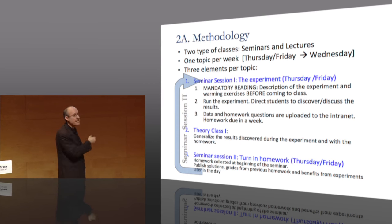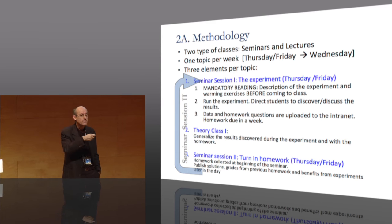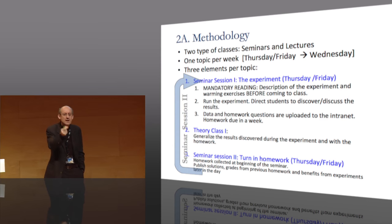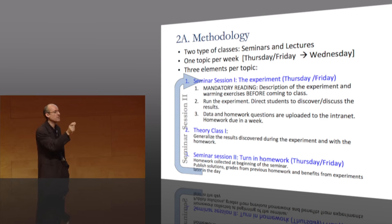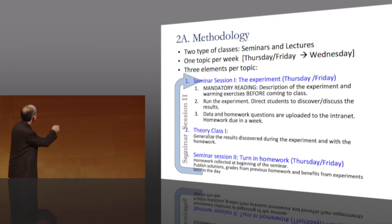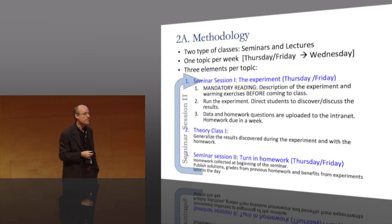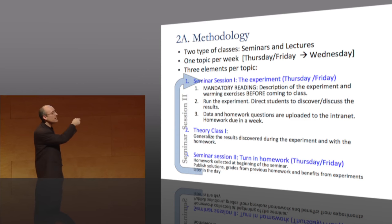The other important thing is that when students come to the theory class, they already know what they don't understand, because they have struggled. They have a clear idea of where they got stuck and couldn't finish their homework. So it helps them focus on the important parts of the class. Then once they resolve those issues in the theory class, they go to the seminar session to finish the homework and turn it in, and we start with a new experiment.